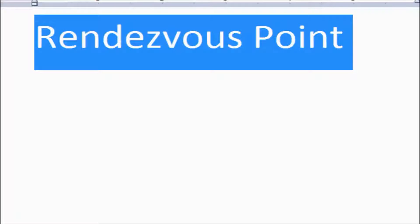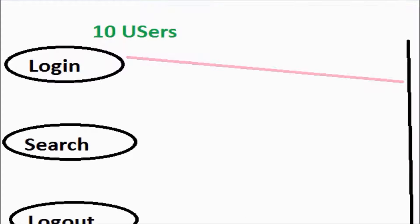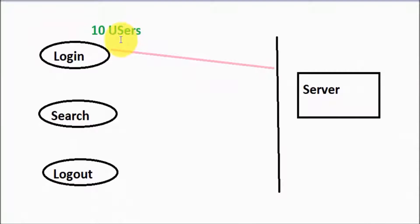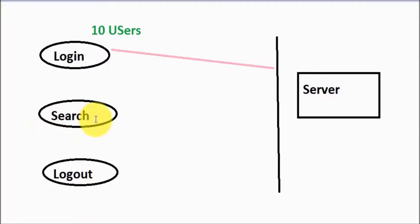Before moving to the Rendezvous point, we need to understand the requirement of the Rendezvous point. I am moving to my paint and here we can see a simple scenario — I have a script with three steps: users are going to login, then perform some search functionality, and logout.